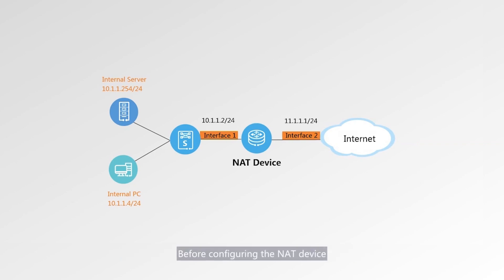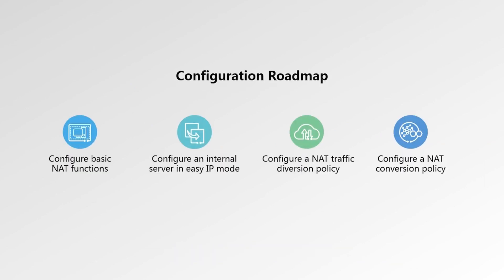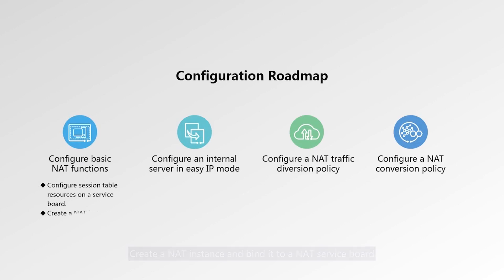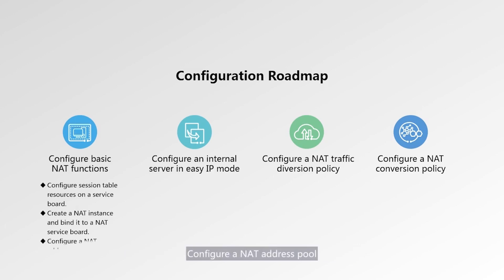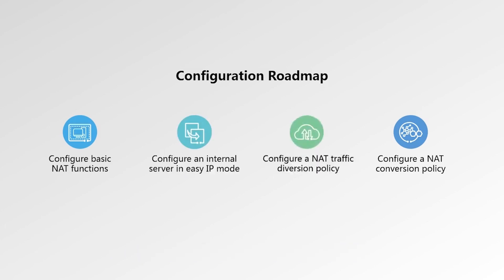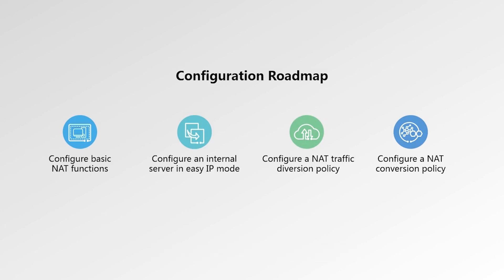Before configuring the NAT device, let's look at the configuration roadmap. Step 1: Configure basic NAT functions, which involves the following sub-steps — configure session table resources on a service board, create a NAT instance and bind it to a NAT service board, and configure a NAT address pool. Step 2: Configure an internal server in Easy IP mode. Step 3: Configure a NAT traffic diversion policy. Step 4: Configure a NAT conversion policy.